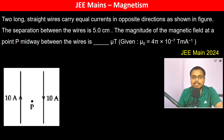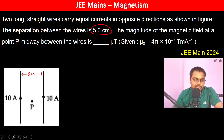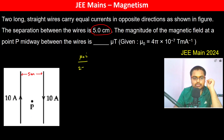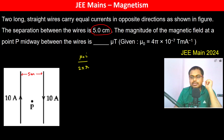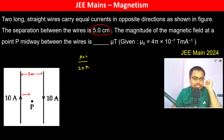Two long straight wires carry equal currents in opposite directions as shown in the figure. The separation between the wires is 5 centimeters. The magnitude of the magnetic field at a point P midway between the wires — for an infinite long wire, the magnetic field is going to be μ₀I / 2πr. The distance from each wire to point P is 2.5 centimeters.